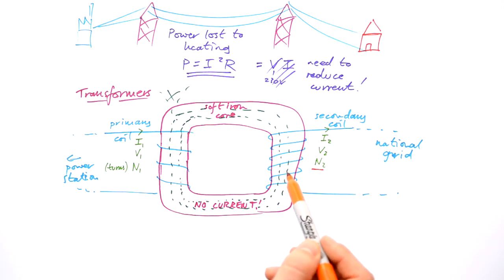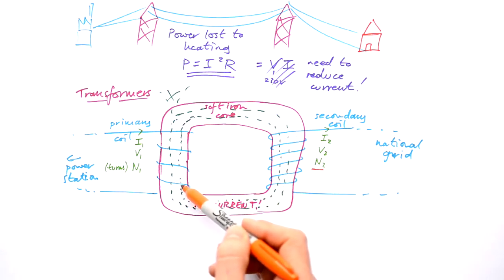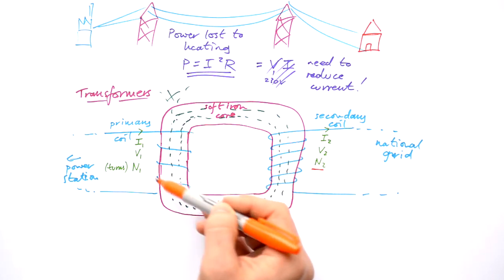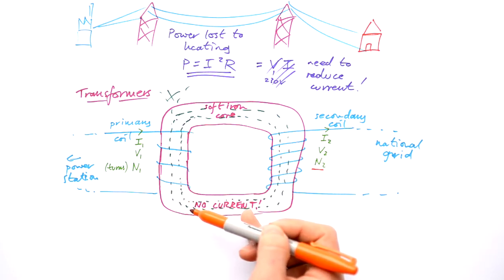If the number of turns here is doubled and the number of turns that the field was created with, then it turns out that we're capturing twice the amount of flux going through here that was created by these turns in this coil over here.